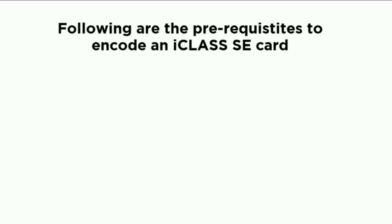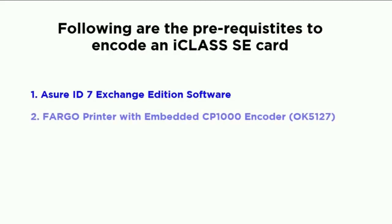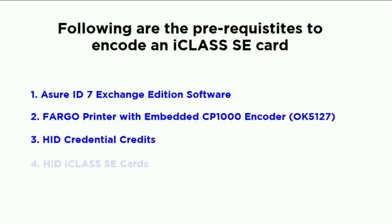In order to encode an iClass card using the AssureID 7 software, you will require the following: AssureID 7 Exchange Edition software, a Fargo printer with an Omnikey 5127 smart card encoder, HID credential credits, and blank HID iClass cards.